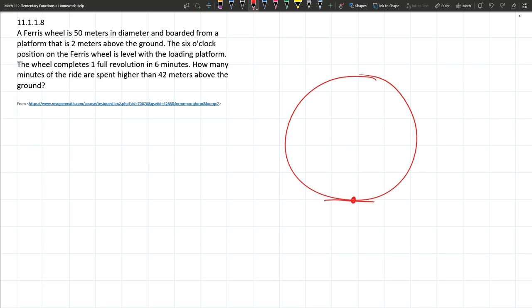Alright, so our platform is right here. Now what I'm going to do is assume that this is on the ground level, and then the ground would actually be two meters below this, so that distance will be two meters.